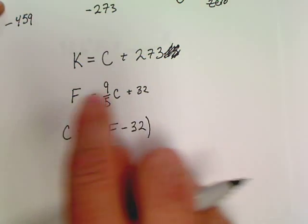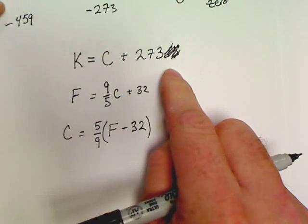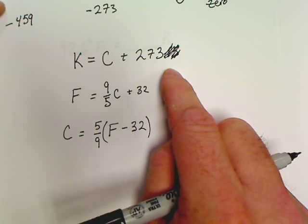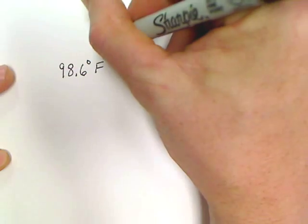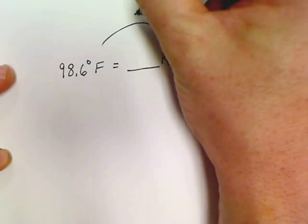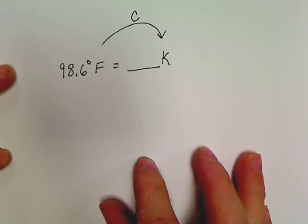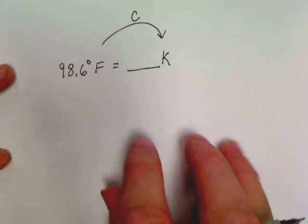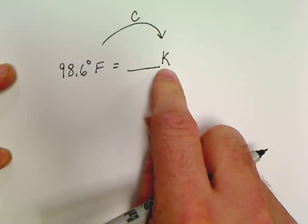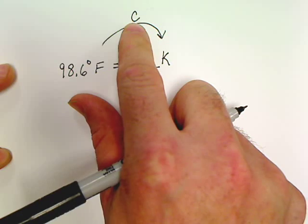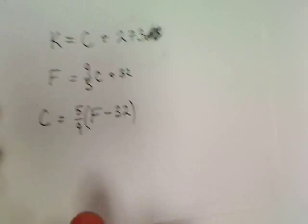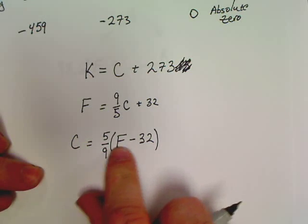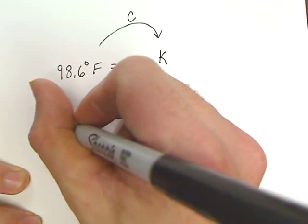You see, we don't have a formula for Fahrenheit and Kelvin. What does Fahrenheit and Kelvin have in common with each other? Well, Fahrenheit and Kelvin have Celsius in common with each other. So if I want to find Kelvin, I must first know Celsius. Can I find Celsius from Fahrenheit? Yes, if I know Fahrenheit I can find Celsius.